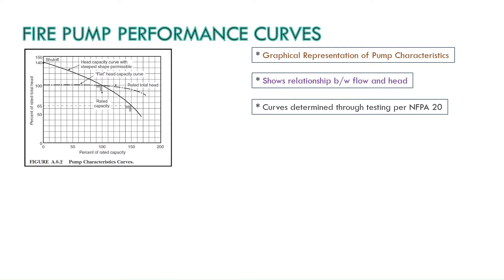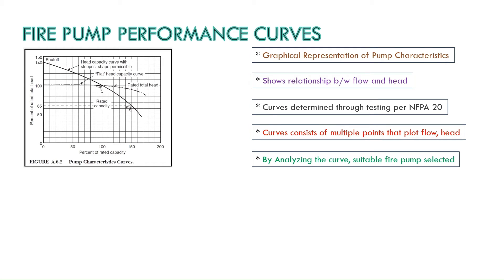This curve is determined through rigorous testing following the guidelines set by NFPA 20. A fire pump's performance curve consists of multiple points that plot the flow rate and total dynamic head at various operating conditions. By analyzing these performance curves engineers and technicians can determine the most suitable fire pump for a specific application.